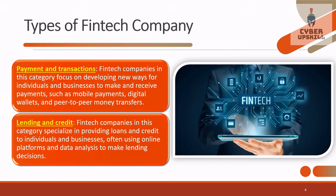The first type of fintech company is the payment and transaction category. These companies develop new ways for individuals and businesses to make and receive payments — mainly mobile payments, digital wallets, and peer-to-peer money transfers. Examples include Google Pay, Amazon Pay, Bharat Pay, and PhonePe. They also provide digital wallets like Paytm Wallet and Amazon Wallet.